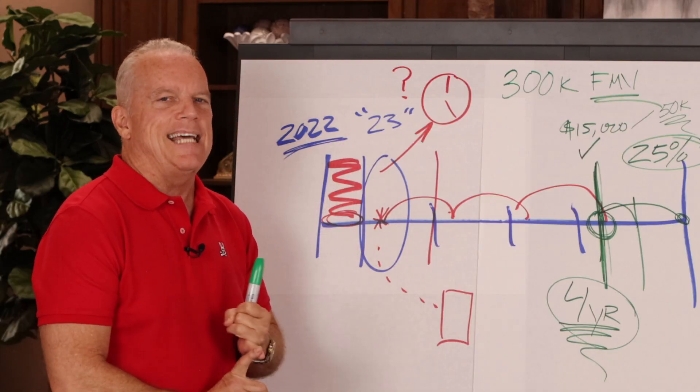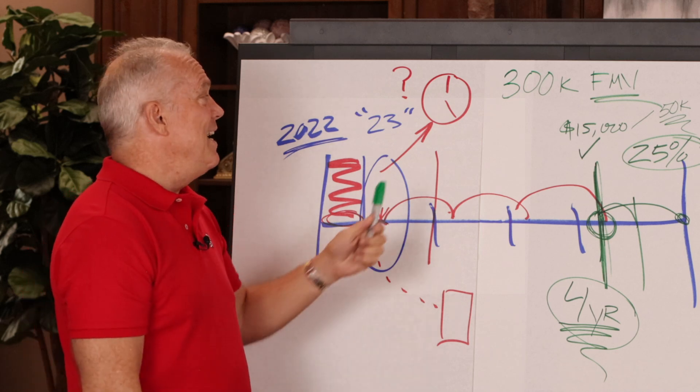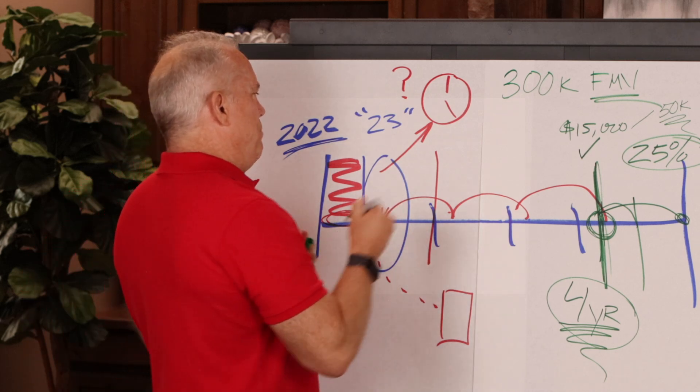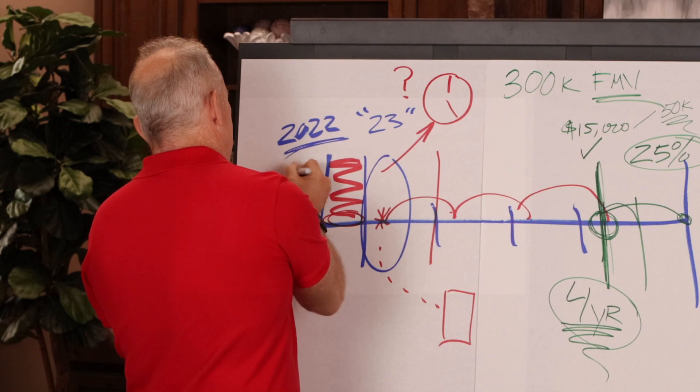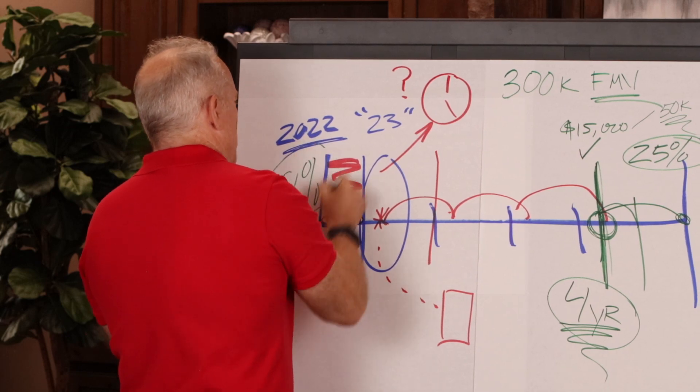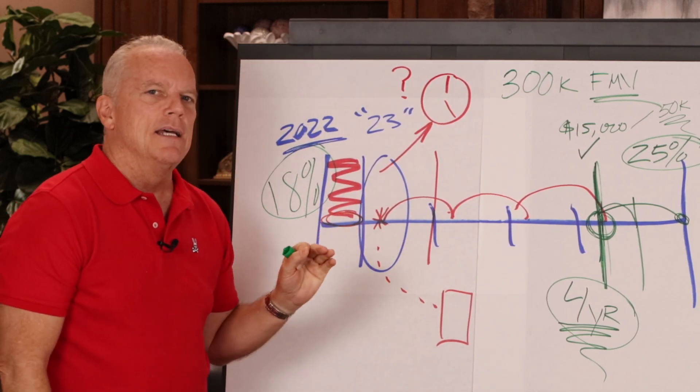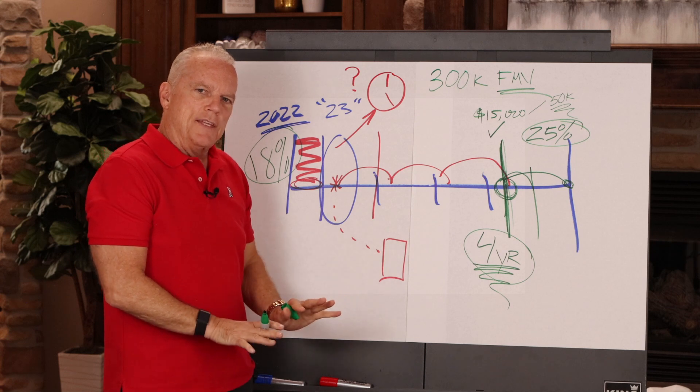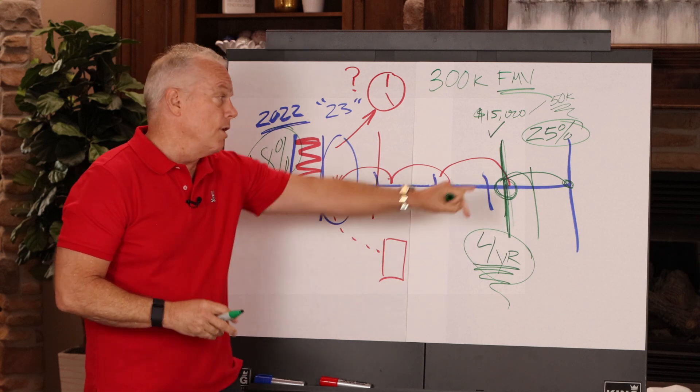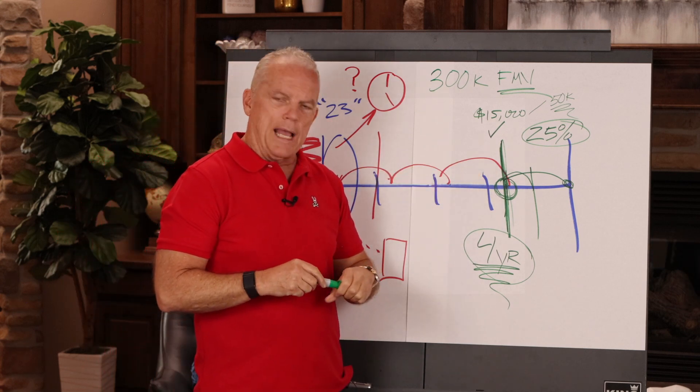Now, tax lien certificates. I'm buying a tax lien certificate for the interest rate. We'll use 18% just for this example right here. So, if I'm getting 18%, I'm assuming I'm going to get redeemed. The underlying security on this deal is the value of the property. Over here, I'm buying the property. I'm going for it.